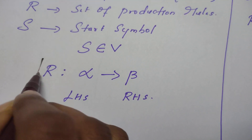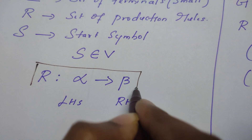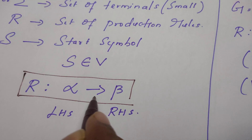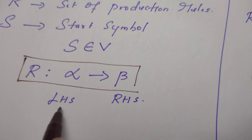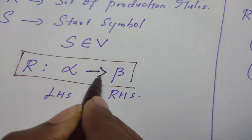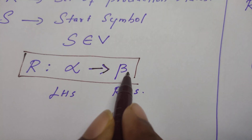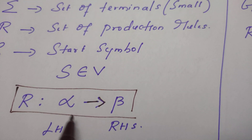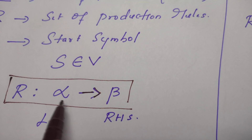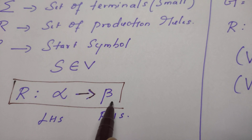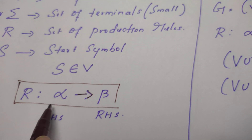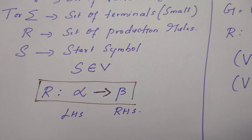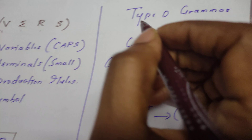In general, the production rule is of this format: alpha derives beta. Alpha is on the left-hand side, then we have an arrow mark, and beta is on the right-hand side. The meaning of the production rule is: in place of alpha, we can replace it by beta, or alpha can be rewritten as beta.